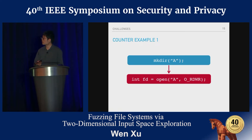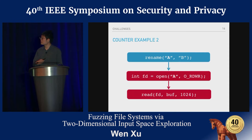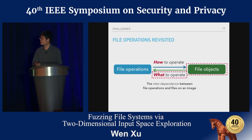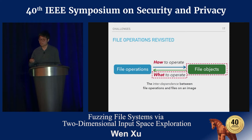For example, they may generate system calls that create a directory but then try to open it with read and write. Or a file has already been renamed early in the syscall sequence, but they still try to open and read it — so those operations are meaningless. The reason is they only generate syntactically correct file operations but ignore the fact that file objects change dynamically during fuzzing.